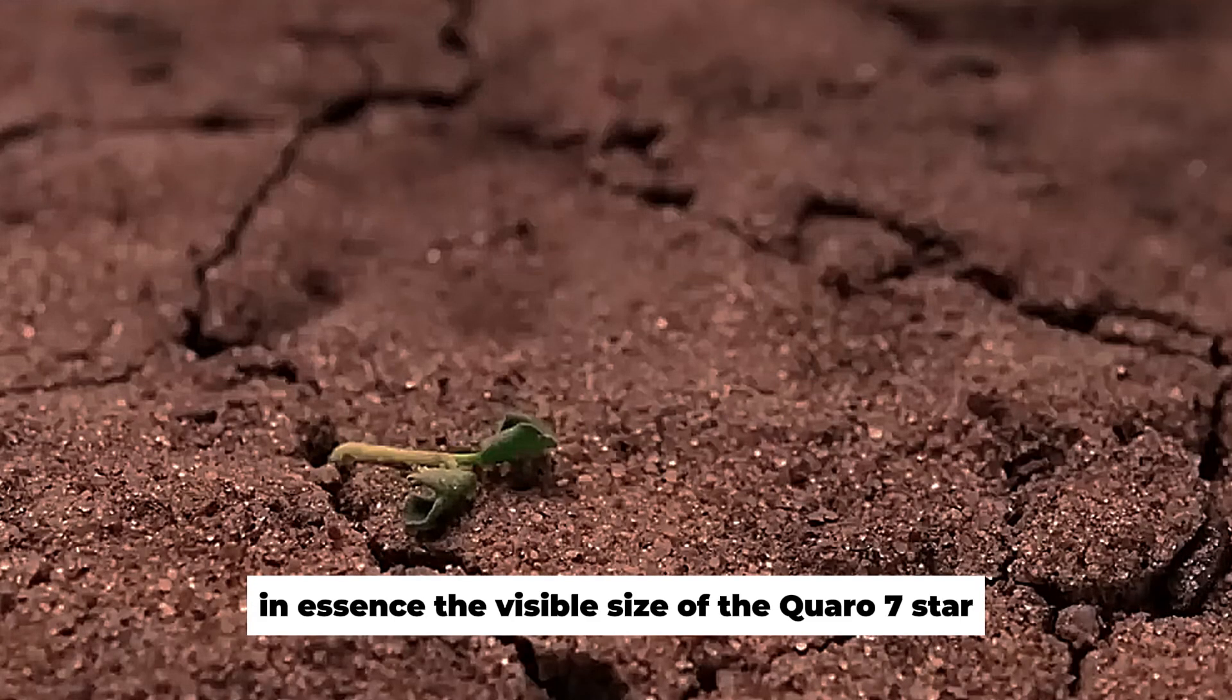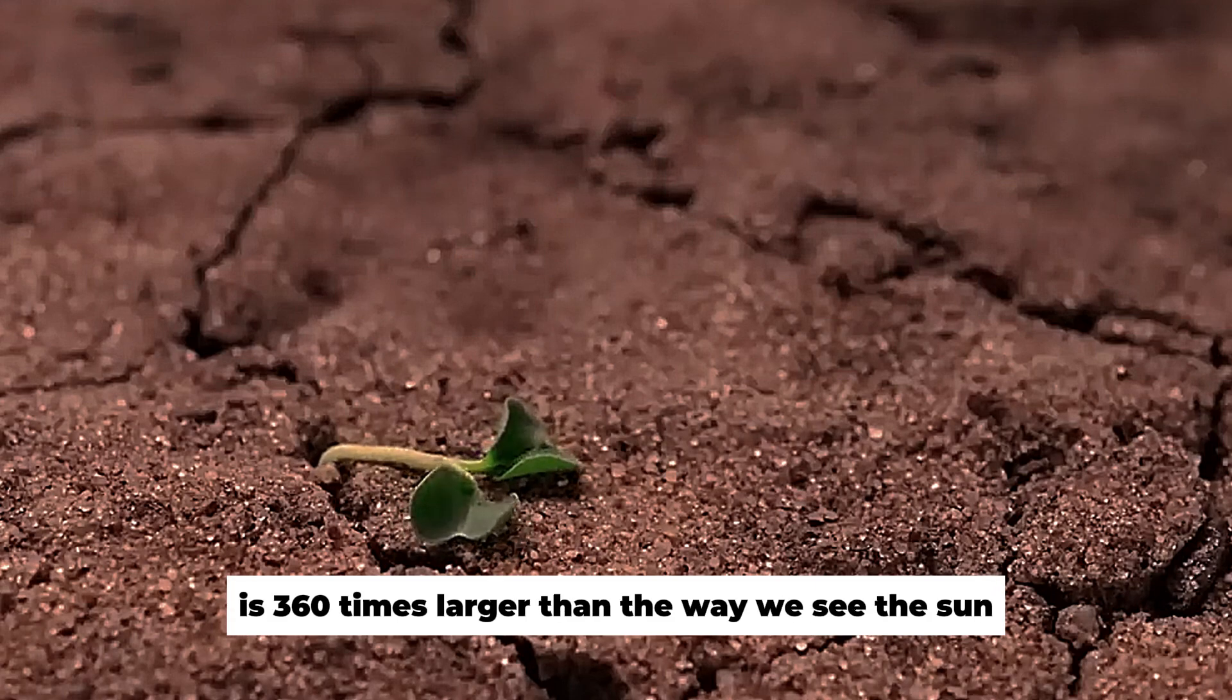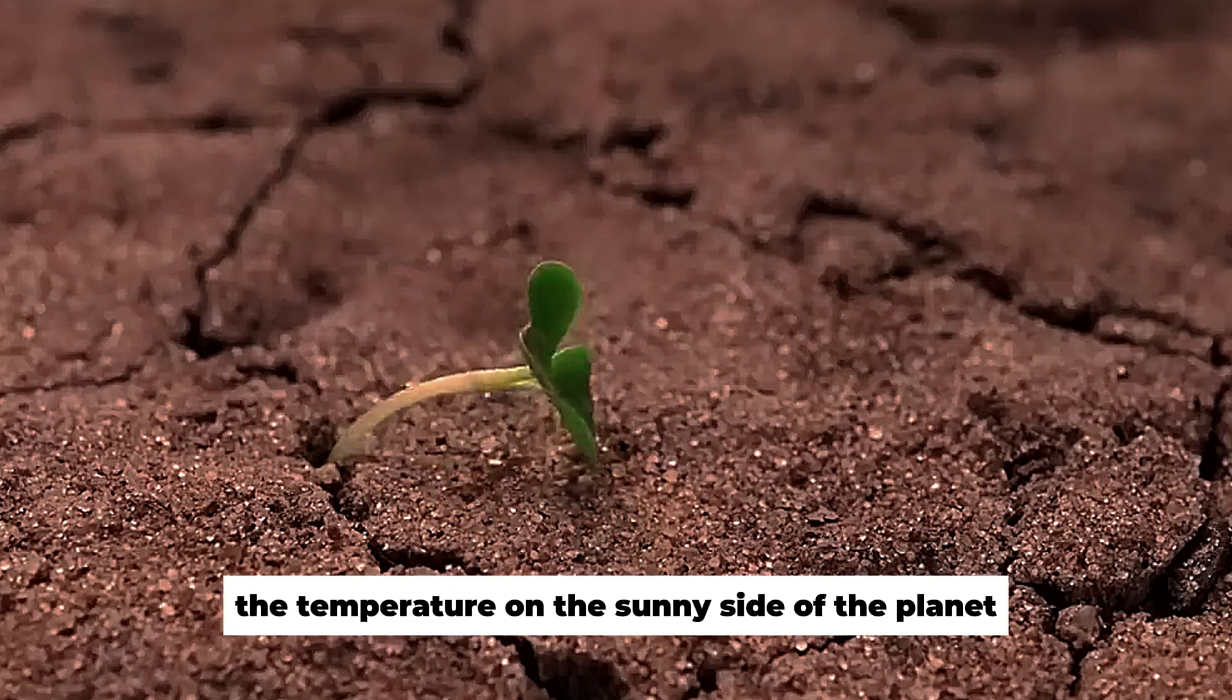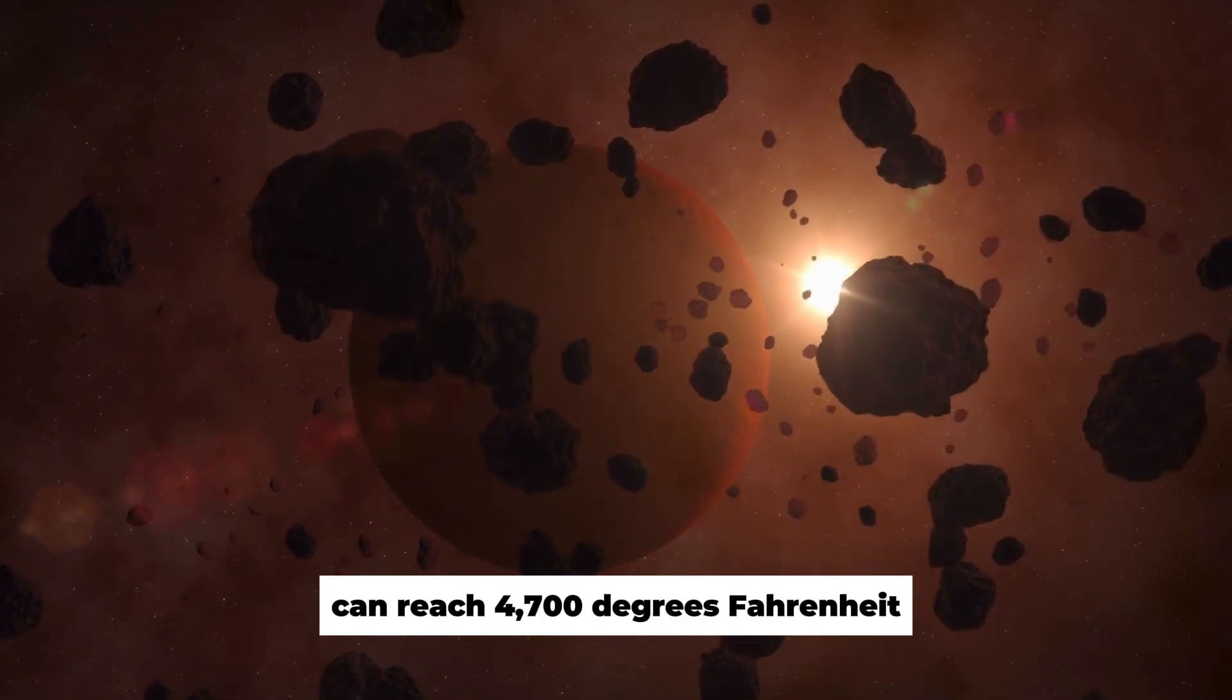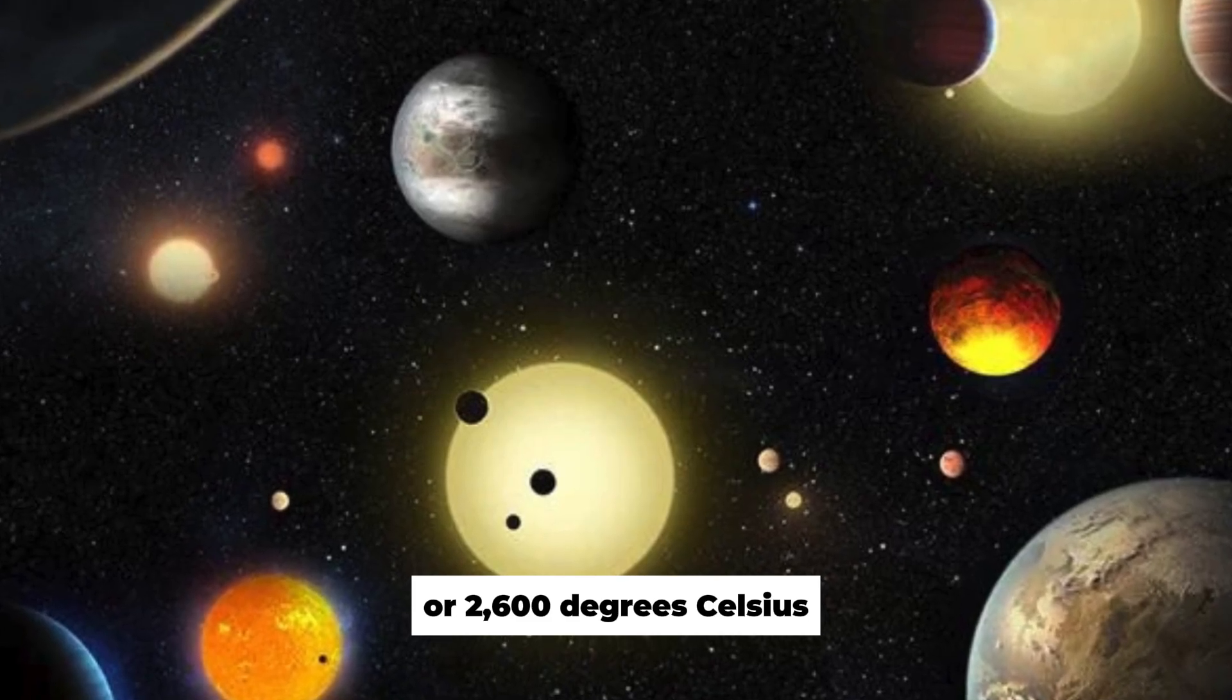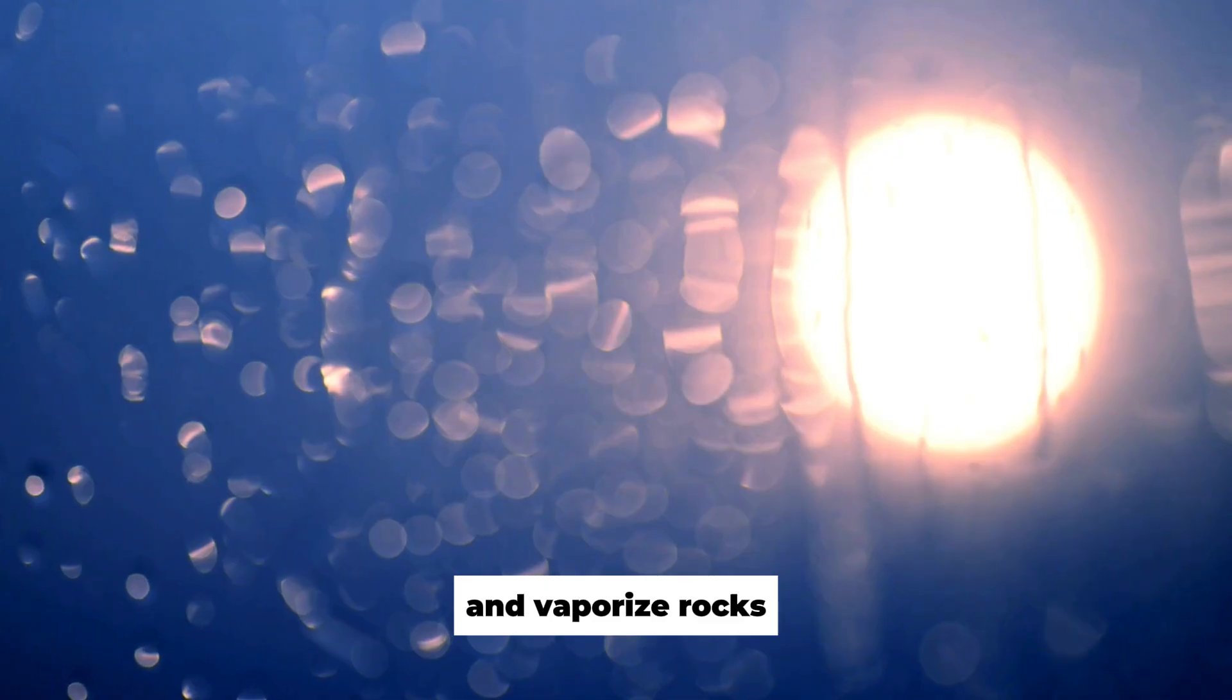In essence, the visible size of the Koro 7 star is 360 times larger than the way we see the sun. The temperature on the sunny side of the planet can reach 4,700 degrees Fahrenheit or 2,600 degrees Celsius, which makes the surface hot enough to melt and vaporize rocks.